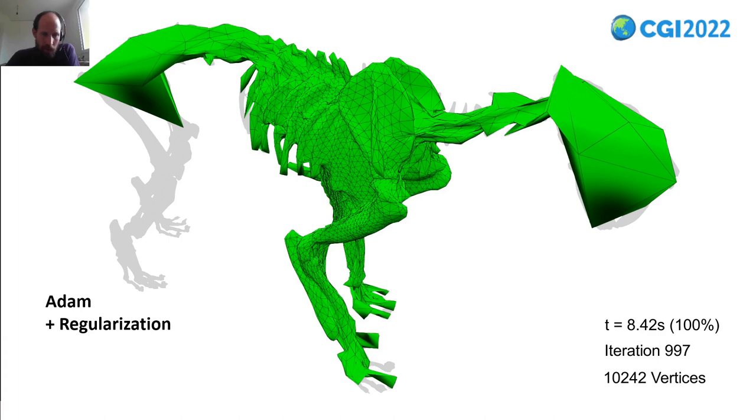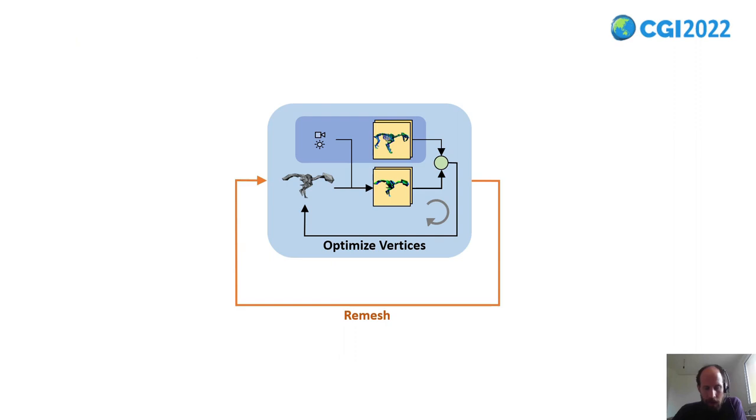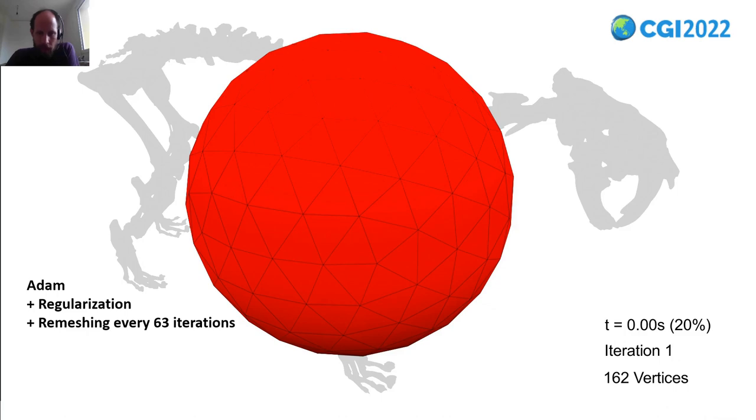What people usually do here is to add classical remeshing after the optimization, and then start the optimization again. We can also do that in a loop multiple times.